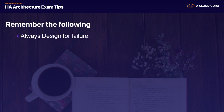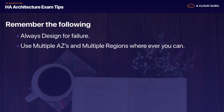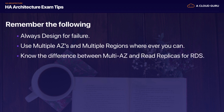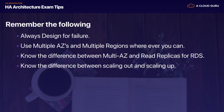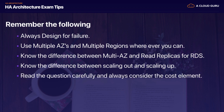So what are my exam tips? Always design for failure. Use multiple AZs and multiple regions wherever you can. Know the difference between multi-AZ and read replicas for RDS: multi-AZ is for disaster recovery, read replicas are for performance. Know the difference between scaling out and scaling up: scaling out uses auto scaling groups to add additional EC2 instances, while scaling up increases resources inside your EC2 instances - for example, going from a T2 micro to a 6x extra large, increasing RAM or CPU. Always read the questions carefully and consider the cost element - sometimes the question asks for the most cost-effective solution, so don't choose the over-engineered expensive option when a simpler one suffices.